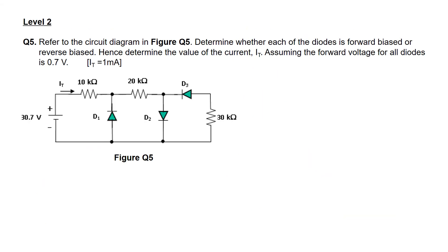Going on now to question 5, which is a level 2 question. By referring to the circuit diagram in figure Q5, we are supposed to determine whether each of the diodes is forward or reverse biased — there are three diodes, D1 to D3. We are also supposed to determine the value of the current IT, which is the total current from the voltage source. The forward voltage for all diodes is assumed to be 0.7 volts.